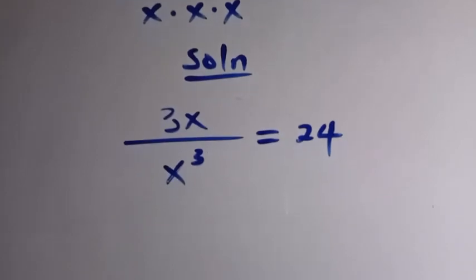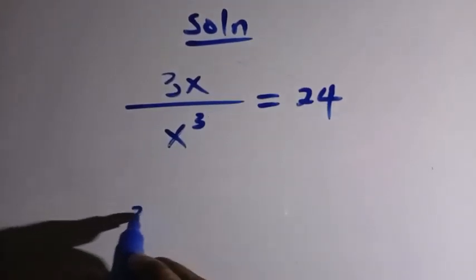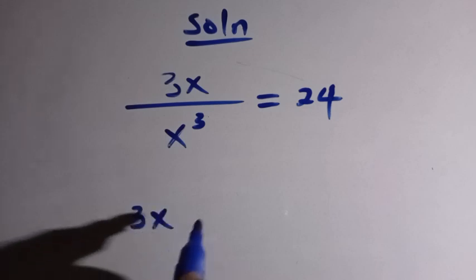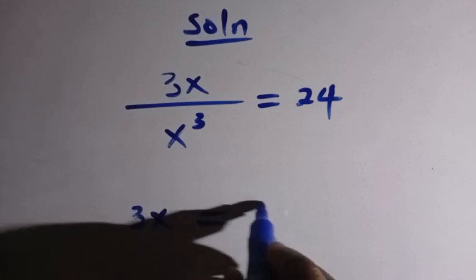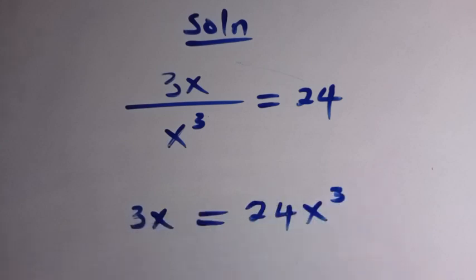So then, when we try and cross multiply here, we are going to have 3x equals 24 multiplied by x raised to the power 3.